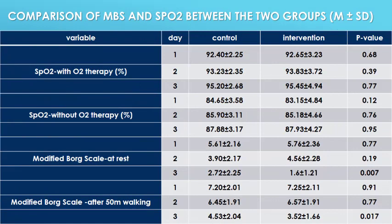This table shows a comparison of MBS scale and SpO2 levels between the two groups. SpO2 values were compared between the two groups. Twelve participants, about 15%, showed no increase in SpO2 without O2 therapy after three days — 4 were in the intervention group (about 5%) and 8 in the control group (about 10%). Both groups showed relative improvement on days 2 and 3. Nevertheless, there was no statistically significant difference between the two groups on days one through three, with a p-value greater than 0.05.